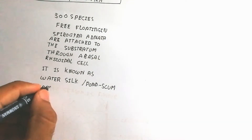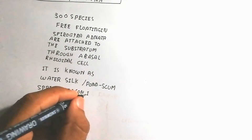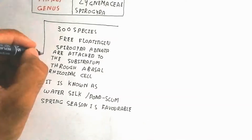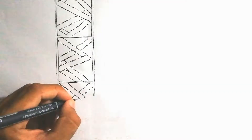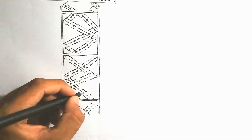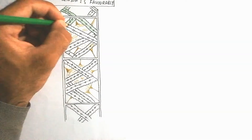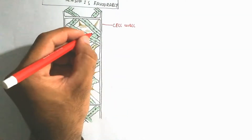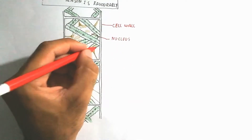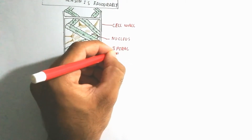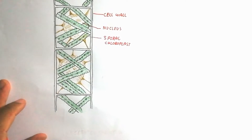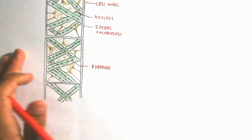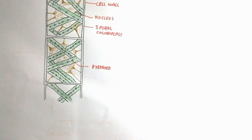Now we will talk about the morphology and structure of the cells of the Spirogyra filament. Here I draw a structure of the Spirogyra cell. A septum is present in every cell. Each cell is made up of a cell wall — the outer layer is the cell wall, and inside is the cytoplasm. A plasma membrane is present, and the nucleus is interconnected with the cell wall via cytoplasmic strands.